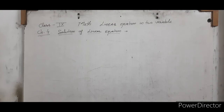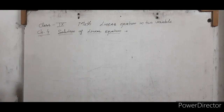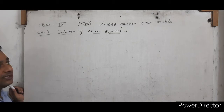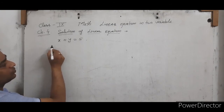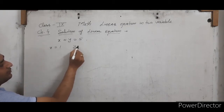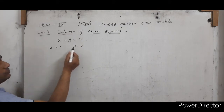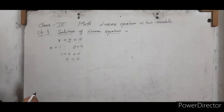The next topic is the solution of a linear equation. To solve linear equations means finding the values of variables X and Y. The values of X and Y which satisfy the given equation are called the solution of the linear equation. For example, X plus Y equals to 5: if X equals to 1 and Y equals to 4, putting these values gives 1 plus 4 equals to 5, so this is one solution.